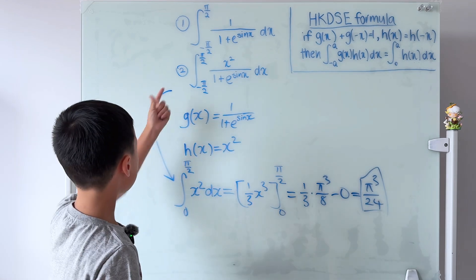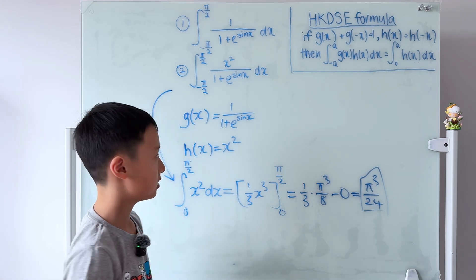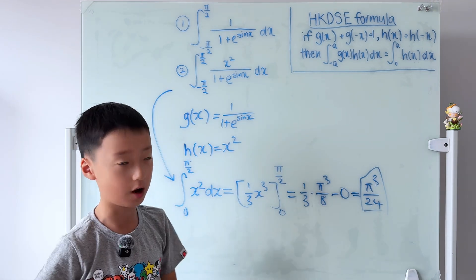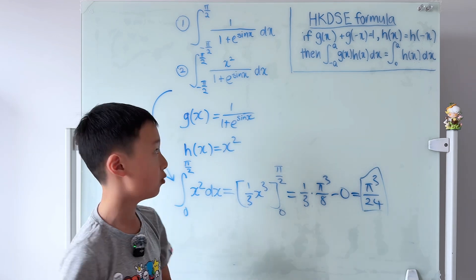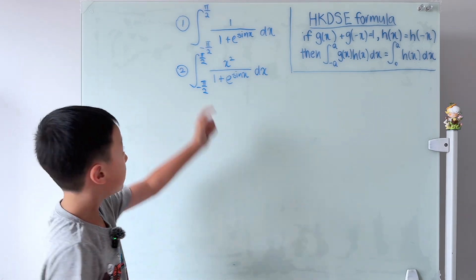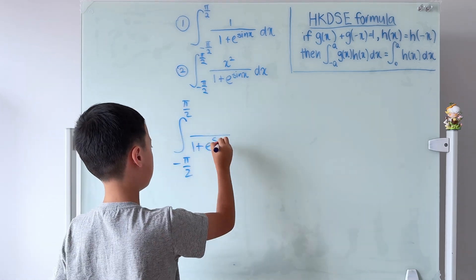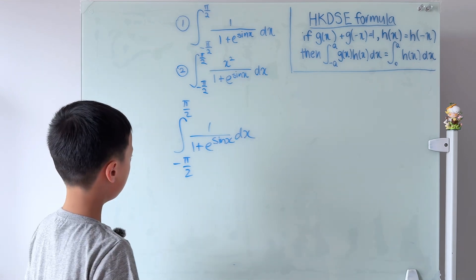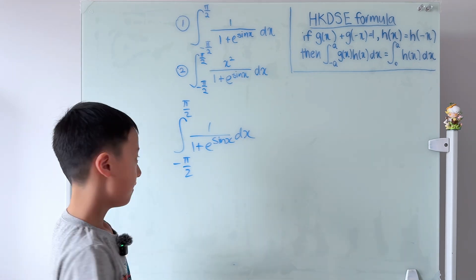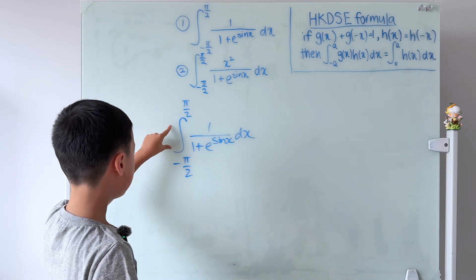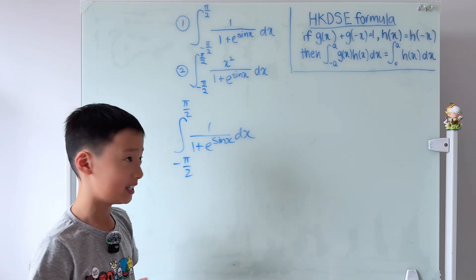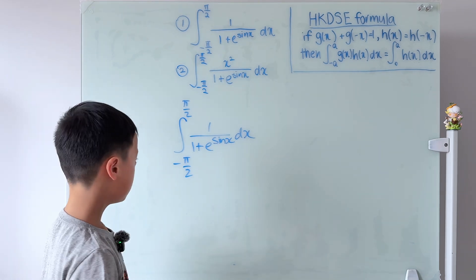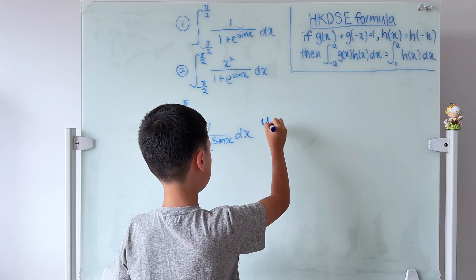That's the answer to the second integral. Now let's think about what if we don't use the HKDSE formula. I believe you can solve Question 2 by yourselves, so I'll do Question 1 as an example without the formula. I'll use a simple trick: let u = −x. This substitution is very effective for definite integrals where the integrand consists of even or odd functions.